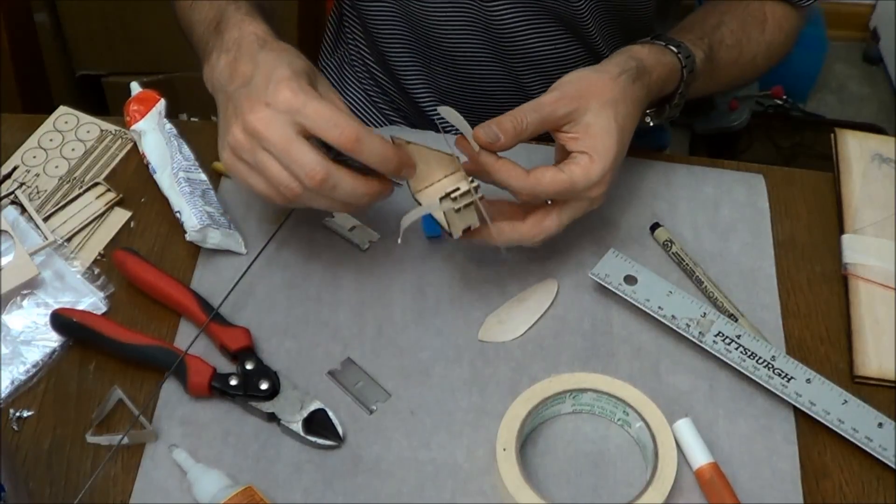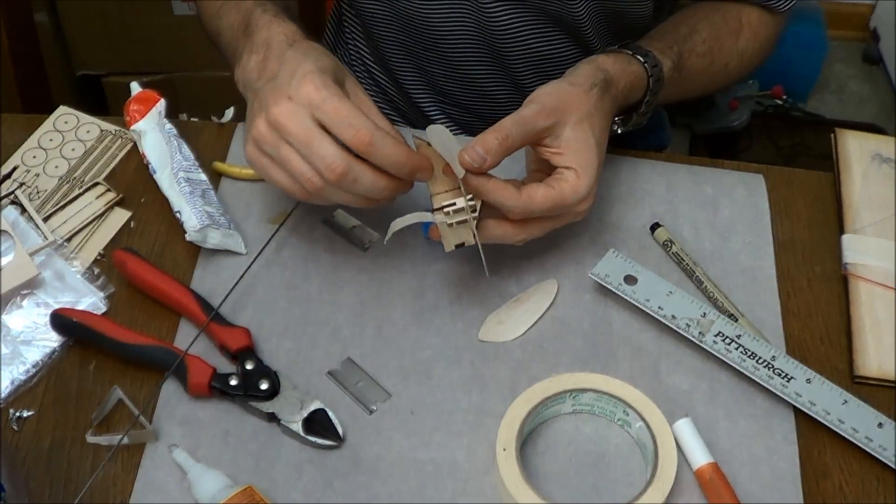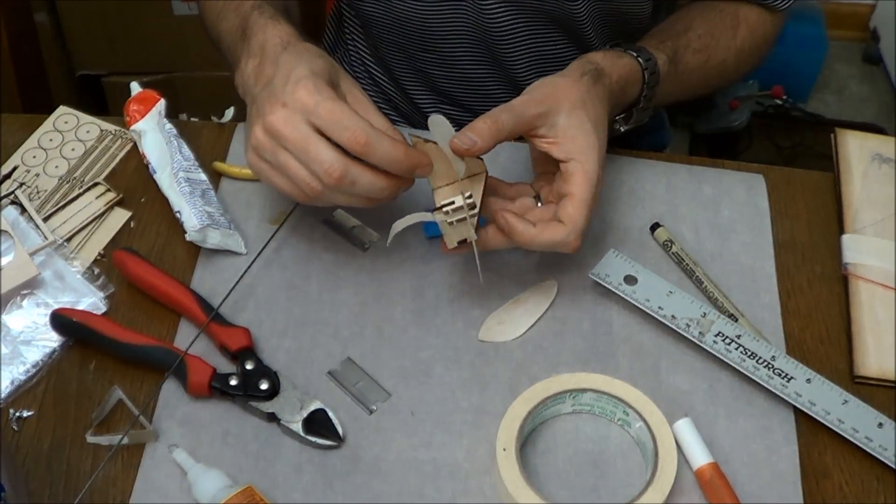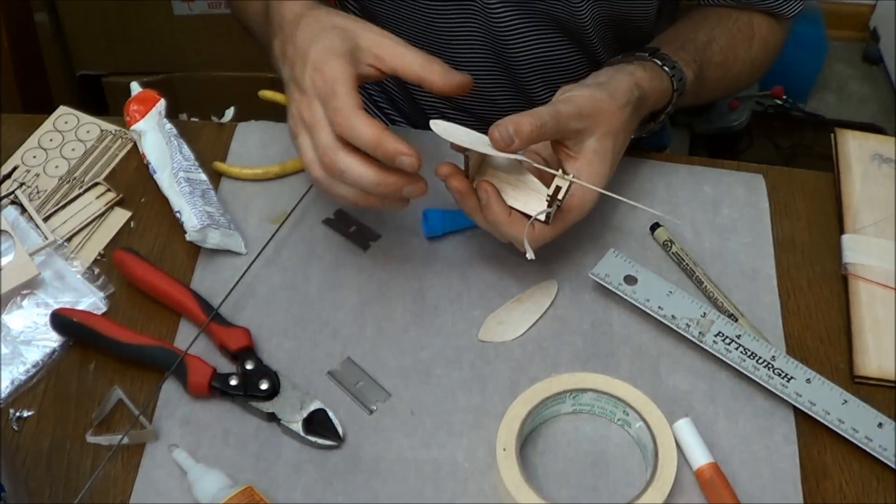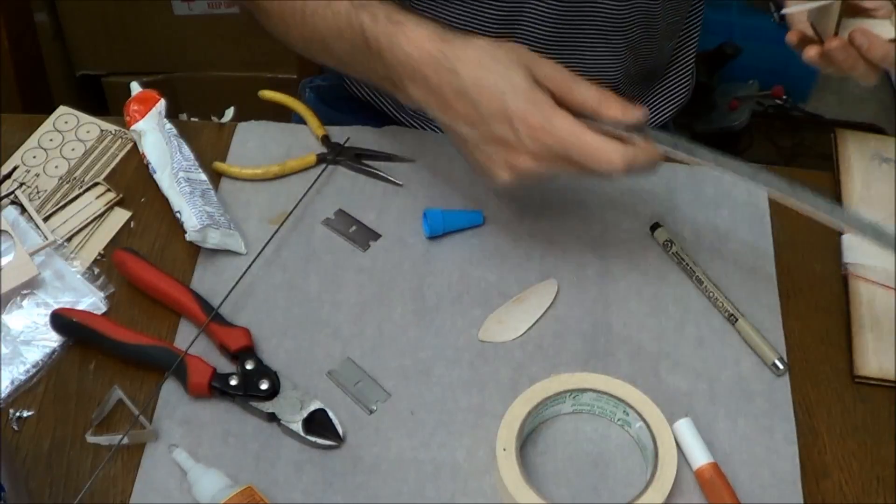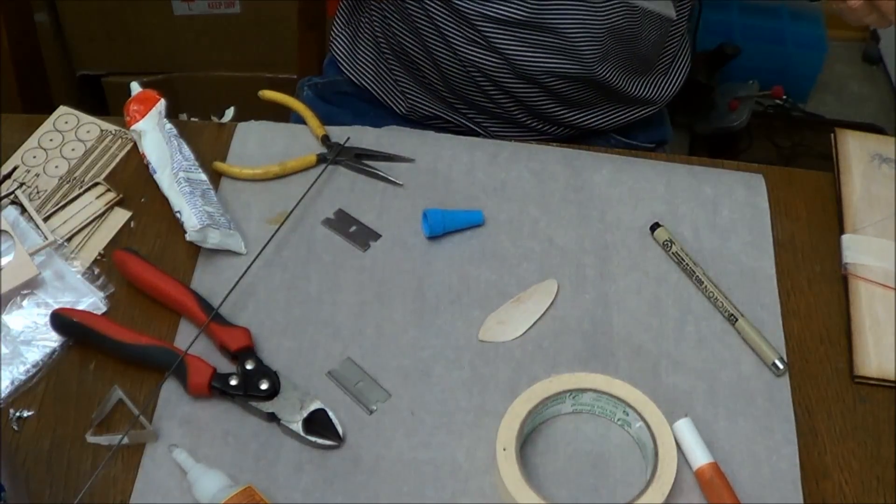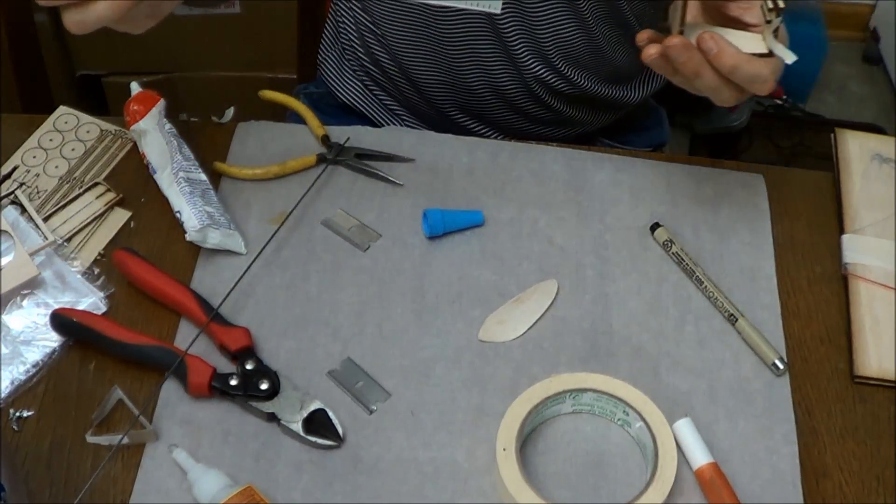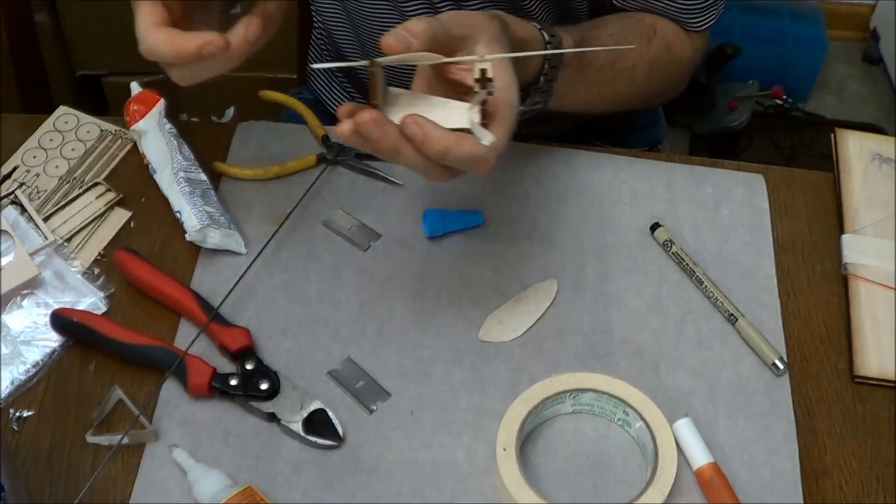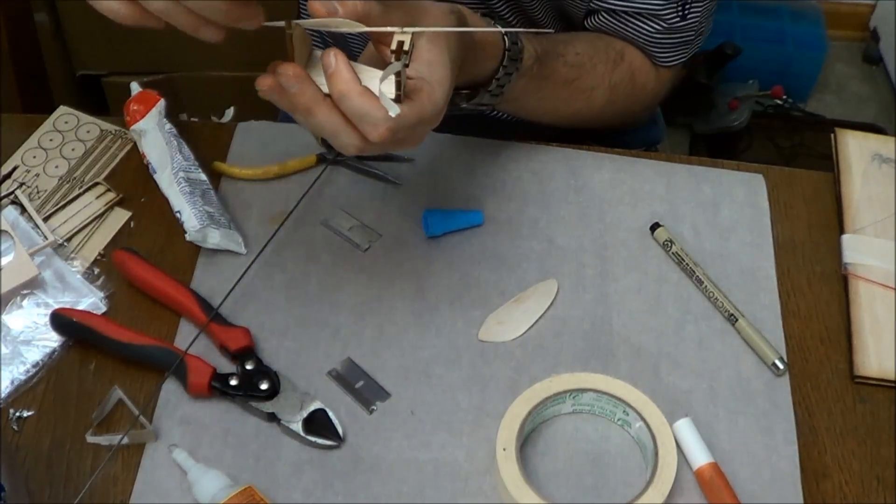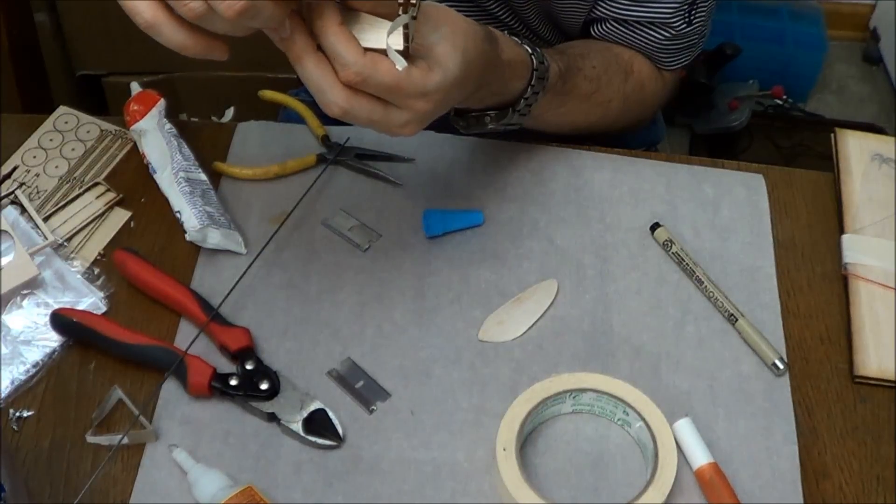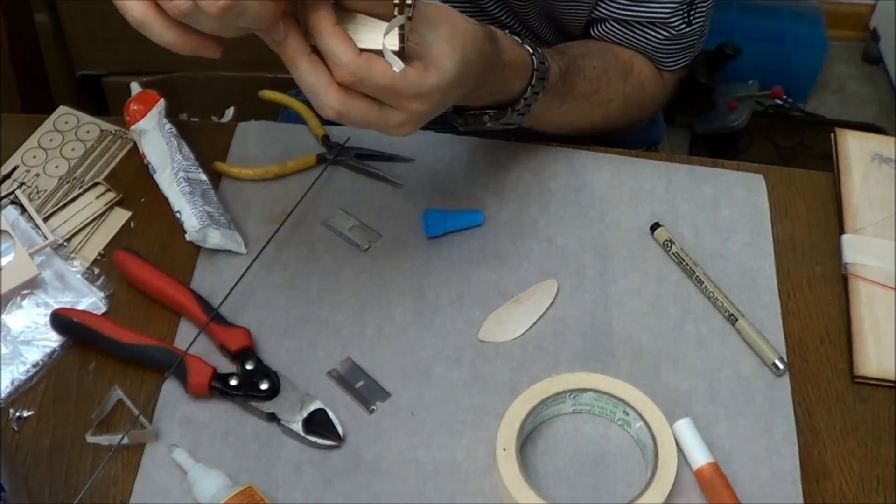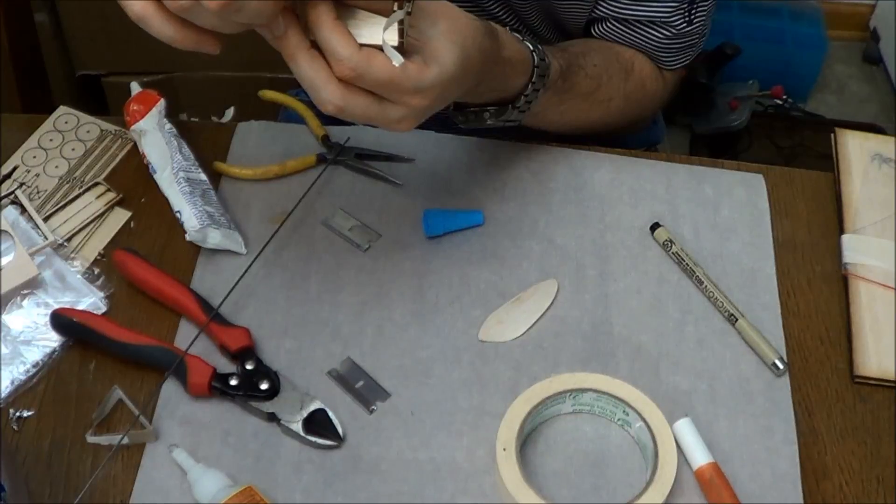Now at this point I should have stopped a minute ago and taken a measurement here. But I failed to do that. So we want this propeller to be 6 inches in diameter. And so that means that the center of the blade tips need to be 3 inches out from the hub of the propeller.